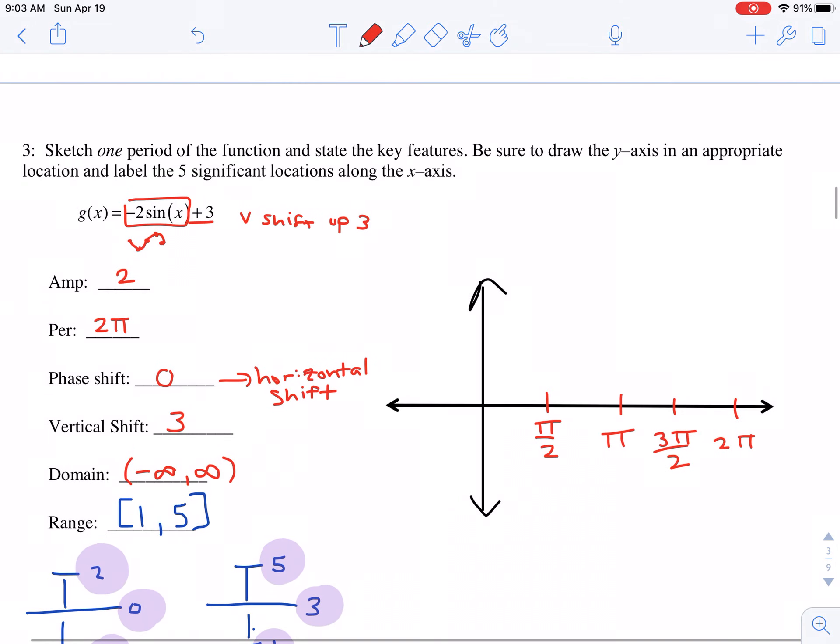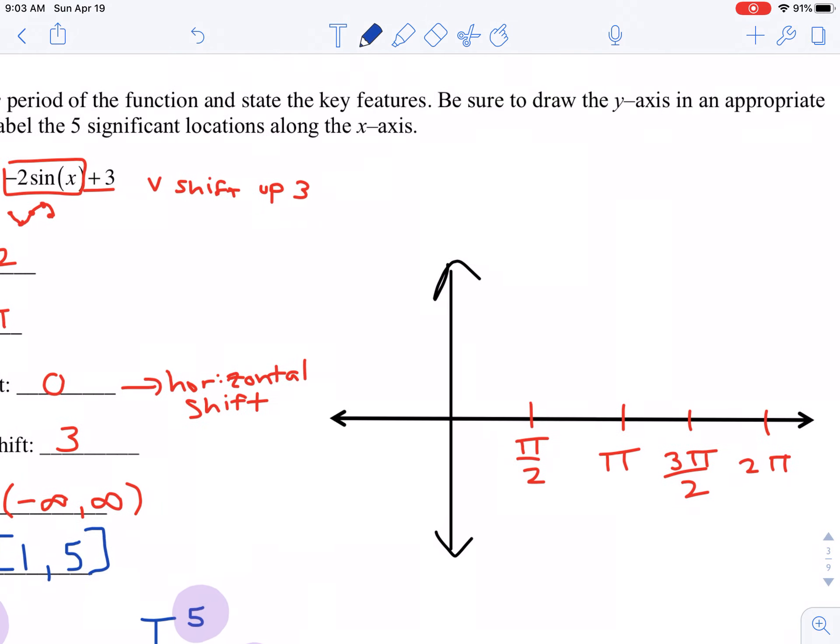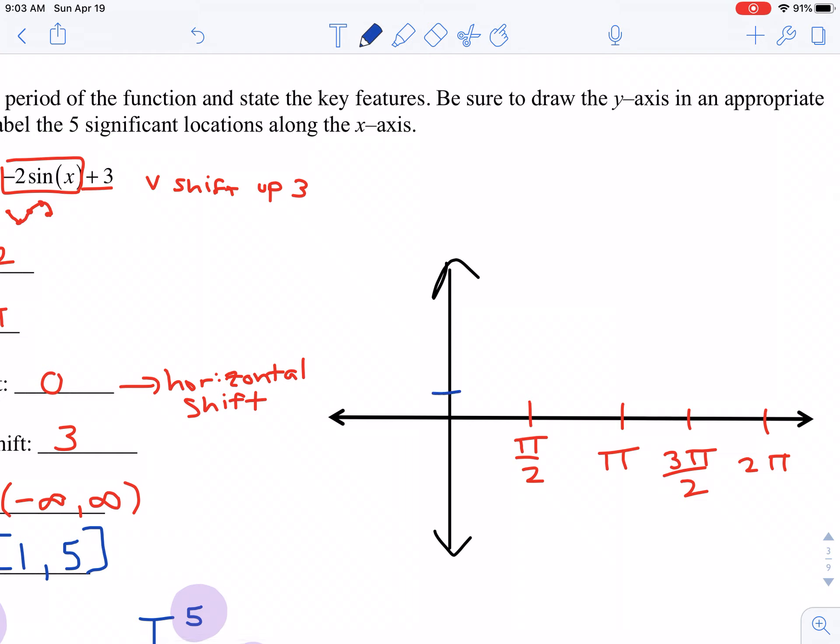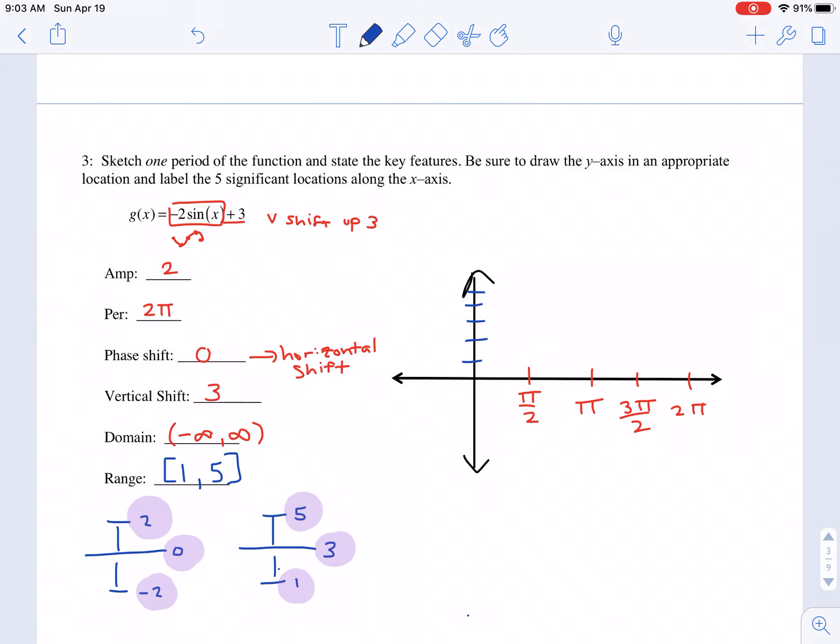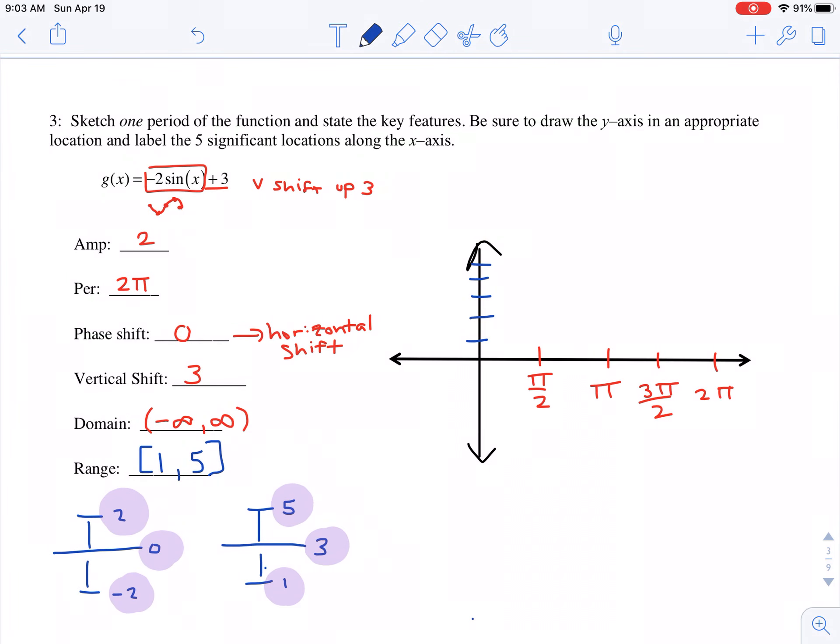And now I'm going to make sure that I need to cover that whole range. So I'm going to make sure that I go one, two, three, four, five, all the way up to five. And we did figure out that our midline is going to be at y equals three. It's no longer at y equals zero because we shifted it up three.